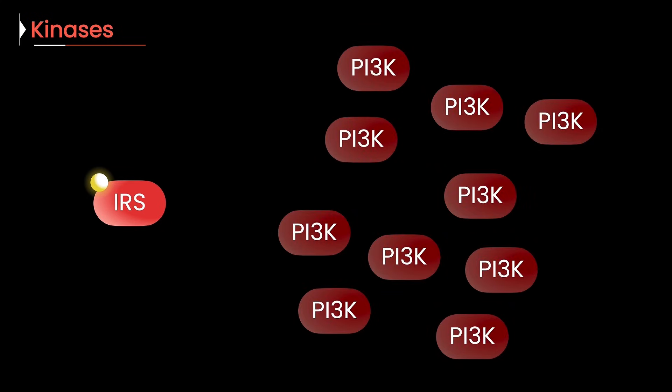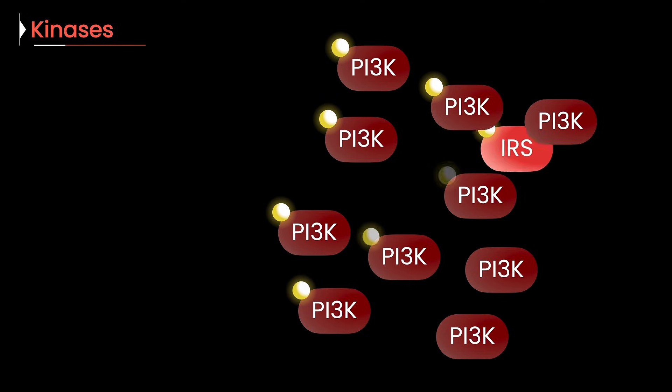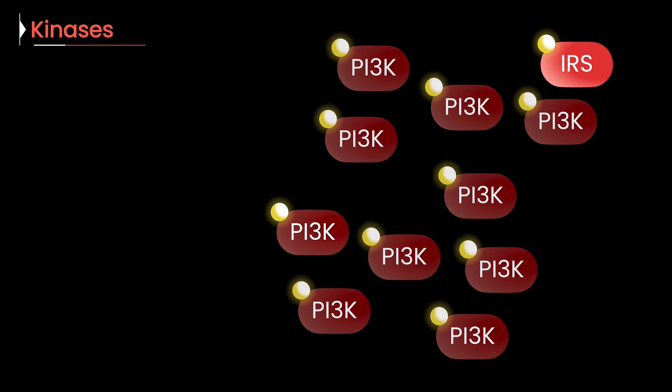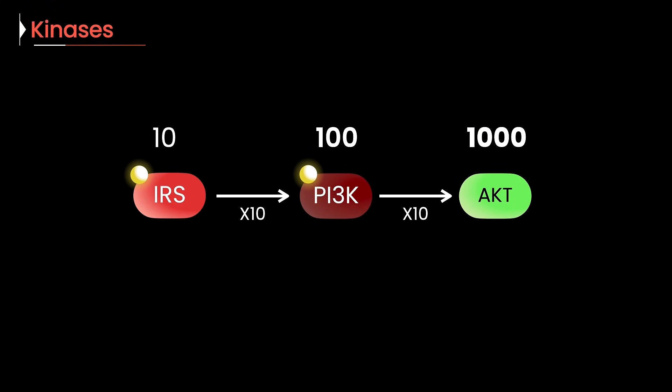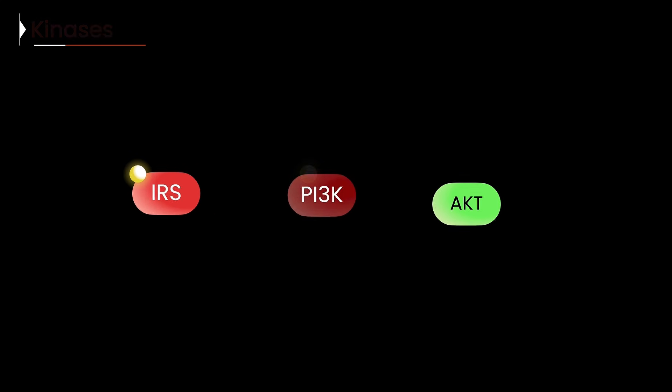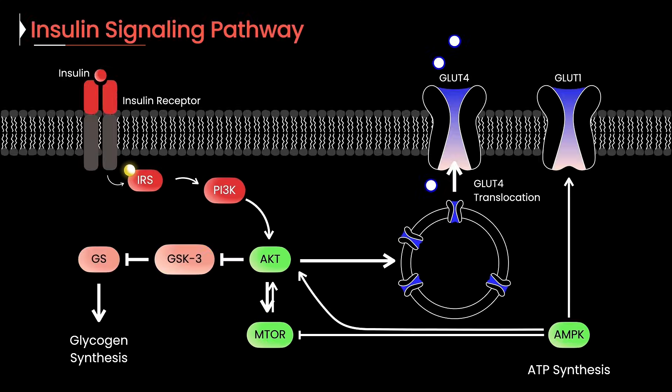But here's a subtle trick that makes it more effective than it should be. Once the kinase is active, it doesn't stop tagging after just one target. It can keep going, tagging maybe 10. And if those 10 are also kinases, you end up tagging 100. Suddenly, the signal is exponentially amplified. And that's how cells turn a tiny nudge into a powerful response.